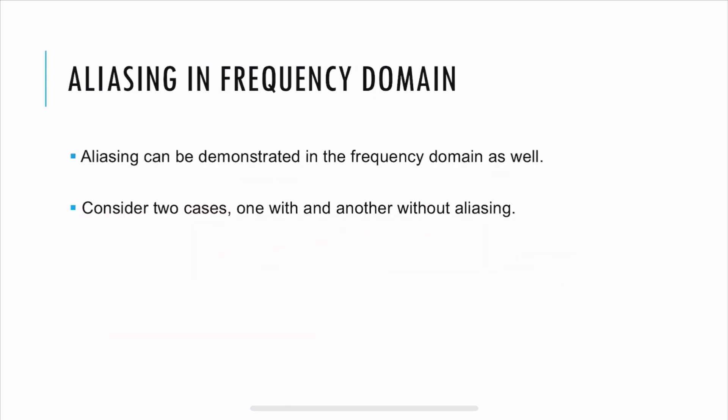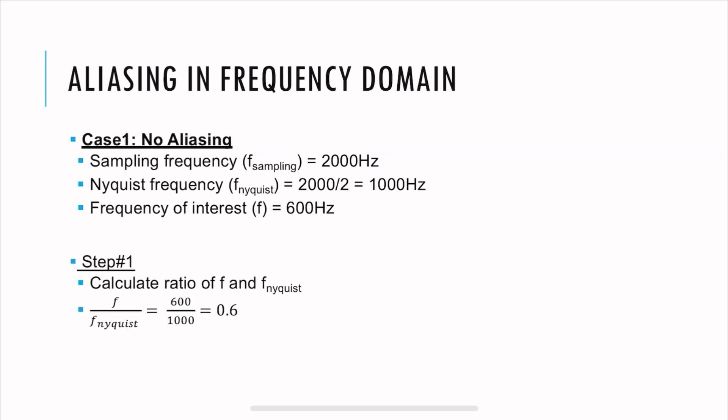Now aliasing can be demonstrated in the frequency domain as well. So let's consider two cases, one with and without aliasing. In the first case, let's say the sampling frequency is 2000 hertz. The Nyquist frequency is half of the sampling frequency, so that's 1000 hertz. And let's say we intend to capture the frequency of 600 hertz. Now, look into this that our frequency of interest is within the Nyquist frequency. So in this case, aliasing is not going to occur.